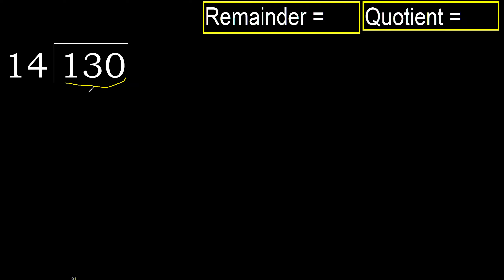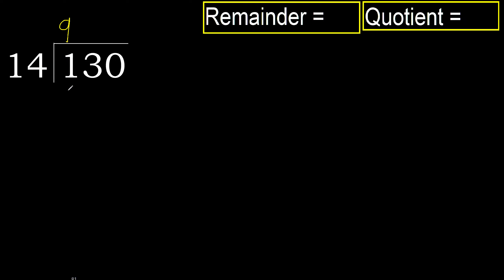130 is not less, therefore work with 130. 14 multiplied by which number is nearest to 130, but not greater. 14 multiplied by 9 is 126, which is not greater. Okay.